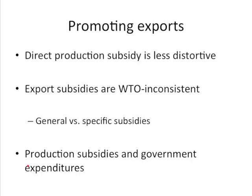Production subsidies that are generally available — say the construction of a national highway system or a national health insurance program that reduces the cost to firms, be they exporters or not — are generally WTO consistent. You can get into trouble if you have a specific subsidy to a particular firm that ends up exporting a product. There will be more discussion about this when we discuss countervailing duties. Suffice it to say, export subsidies have a lot more problems associated with them than production subsidies, but production subsidies too can cause difficulties under WTO obligations if they are specific.